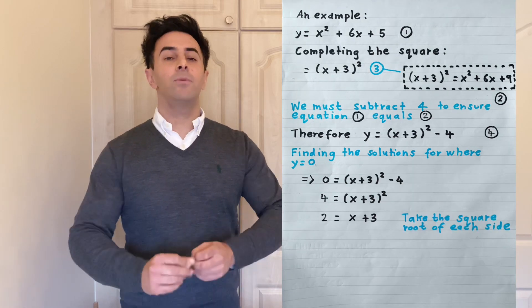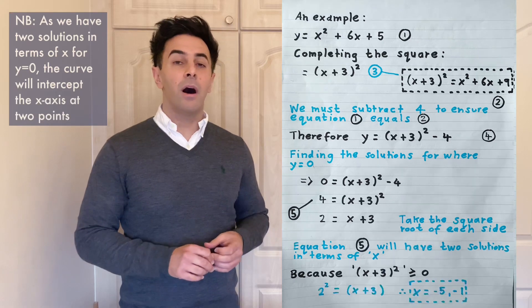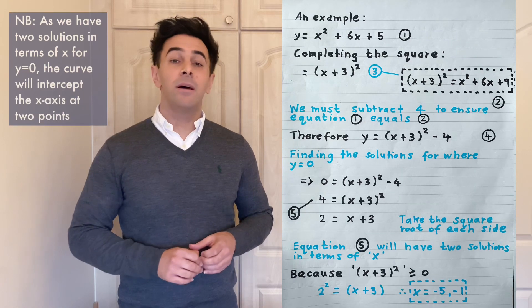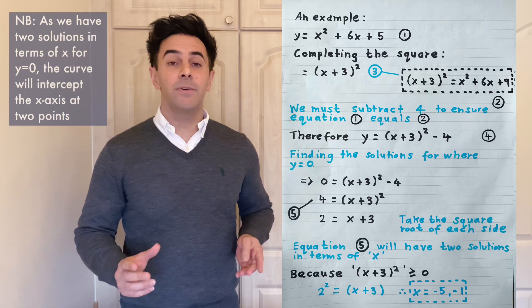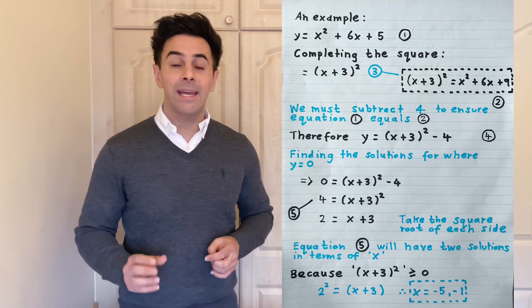By using the number line we can observe that the two solutions of this equation are minus 5 and minus 1. So x equals minus 5 and minus 1 to satisfy the equation such that it gives the answer of y equals 0.